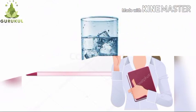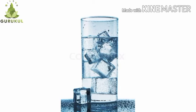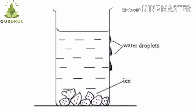The air around the glass contains water vapor. When we put ice cubes in the glass, the glass becomes cold, and that makes the air around the glass cold too. Then the water vapor present in the air also cools and forms very tiny droplets of water, and they make the outside of the glass moist.